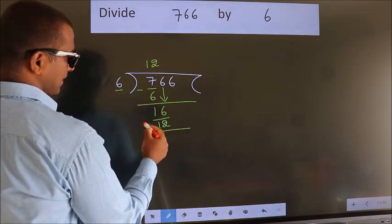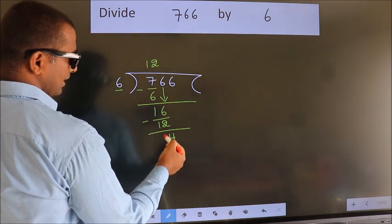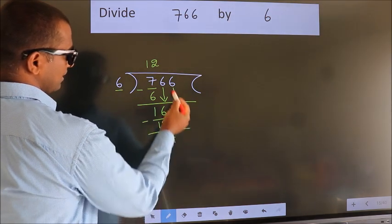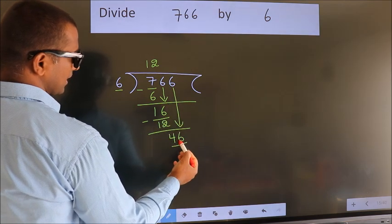Now we subtract. We get 4. After this, bring down the beside number. So 6 down. So 46.